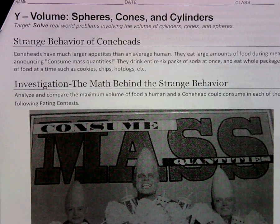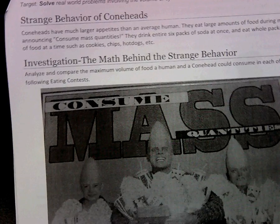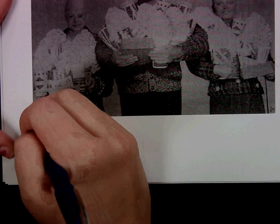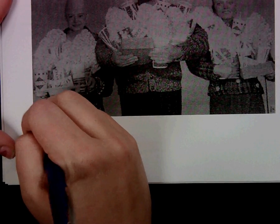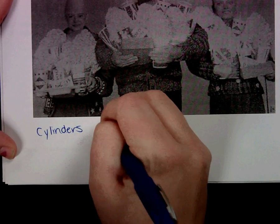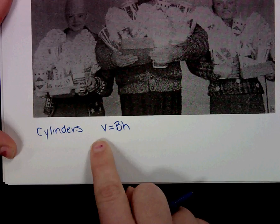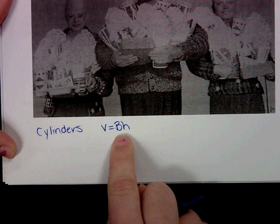For this activity, you're going to be comparing the volumes of spheres, cones, and cylinders. So you may want to write your formulas. For cylinders, the formula is V equals capital BH, where the volume equals the area of the base times the height.